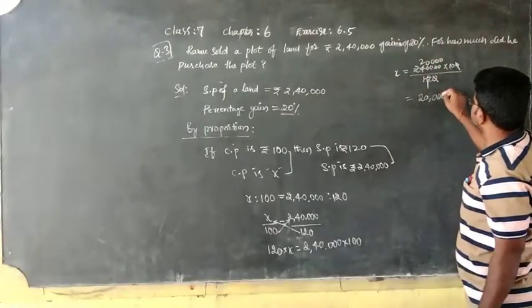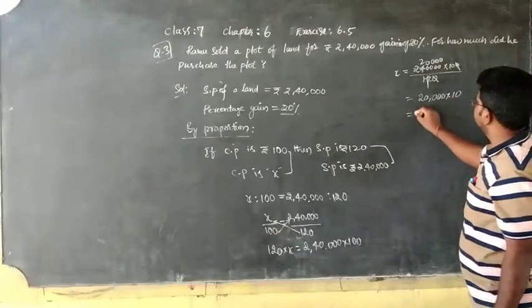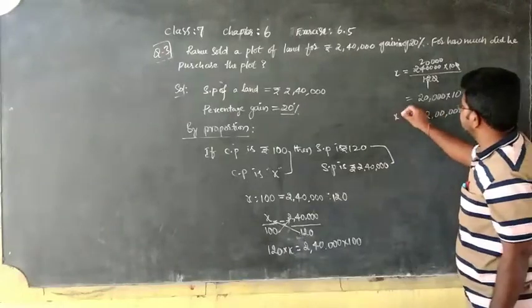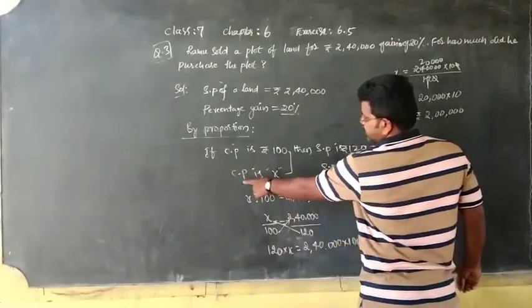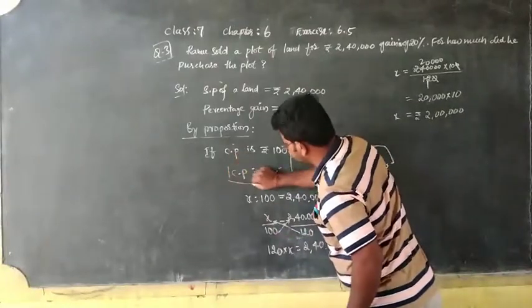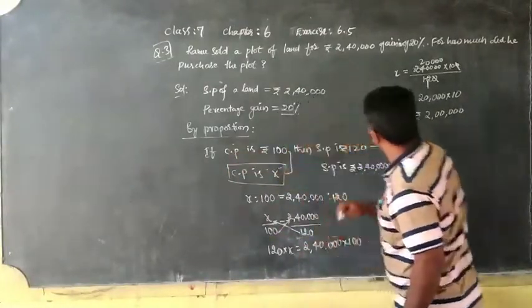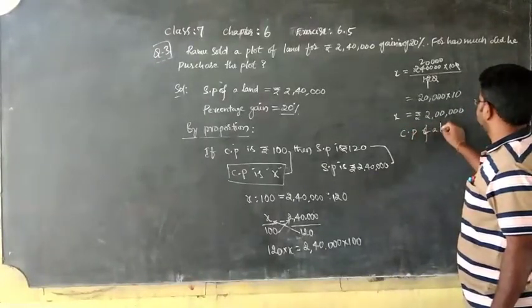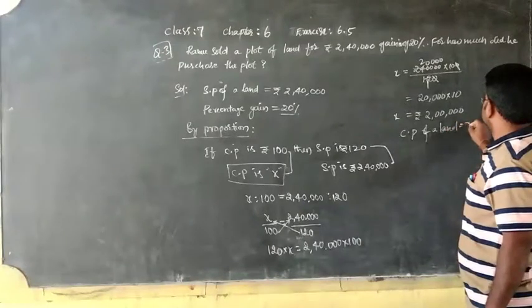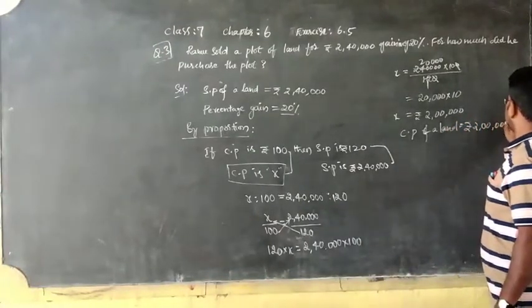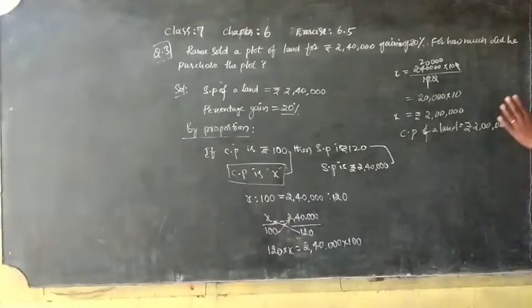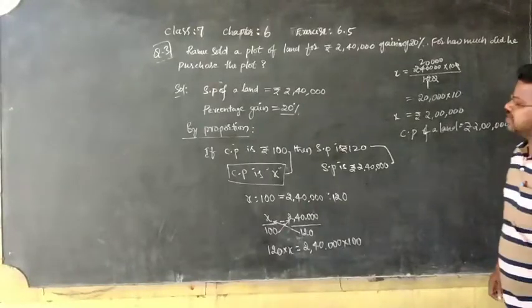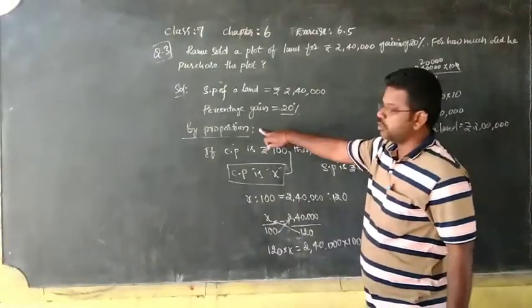The X is - we are taking this as CP. CP, cost price of the land is 2 lakh rupees. So this is the way of finding the cost price of the land by using proportion method.